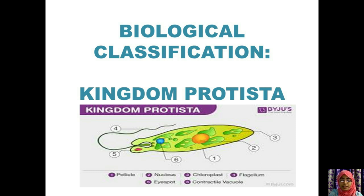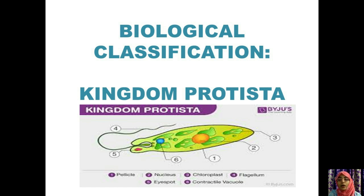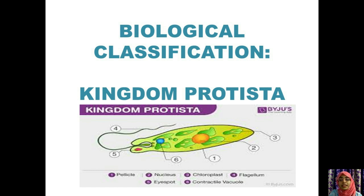Welcome back to the first chapter of our subject, botany. We were discussing biological classification — how organisms have been classified according to their characteristic features and kingdoms. That is, the two-kingdom classification. We studied the history of kingdom classification, how kingdoms were classified by various scientists according to their characteristic features. The very first classification was Kingdom Monera.